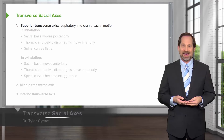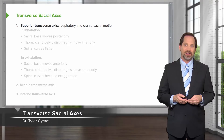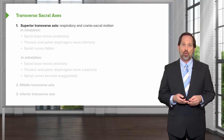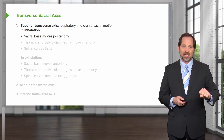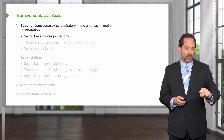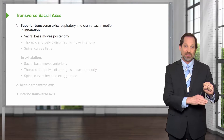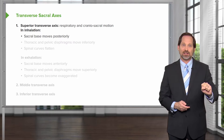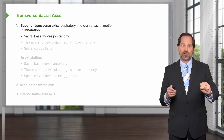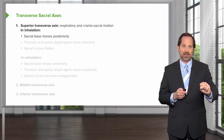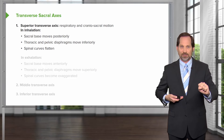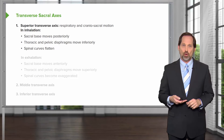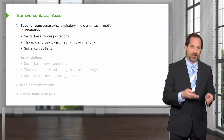We're going to talk about the transverse sacral axis in more depth now, because you're going to see different things when a person takes a deep breath in versus out. If you're taking a deep breath in, the sacral base is going to move posteriorly, the coccyx will come down and move anteriorly, and the thoracic and pelvic diaphragm go down, and the lumbar curve will flatten. That's normal inspiration and normal motion of the sacrum with inspiration.